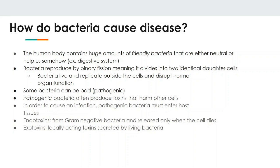So how do bacteria cause disease? They divide by binary fission, which is almost like a simplified version of mitosis — they divide everything in their cells and you get two identical daughter cells. They don't need a host to replicate, which will become very key when we talk about viruses. The main way bacteria cause disease is through releasing toxins. There are two general types: endotoxins, from gram-negative bacteria, released only when the cell dies; and exotoxins, released from all bacteria — locally acting toxins secreted by living bacteria, both gram-negative and gram-positive.